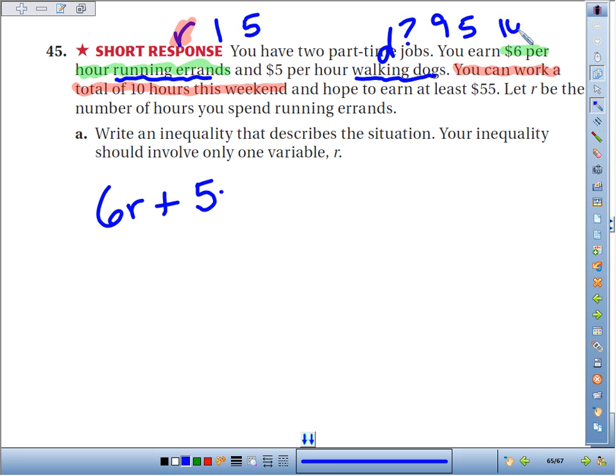How much does that leave for your jobs? The answer is 10 minus R. If you take 10 hours minus however many hours you spent running errands, that gives you what's left to walk the dogs.